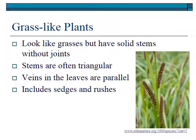Grass-like plants, as the name would imply, look like grasses, but they have solid stems without joints. Their stems are often triangular, so if you roll them in your hand, you'll see that they're triangular. The veins are parallel to the margin just like they are for grass leaves, so the leaves have parallel venation. The most common terms for these plants are sedges and rushes.